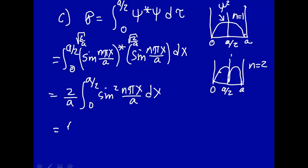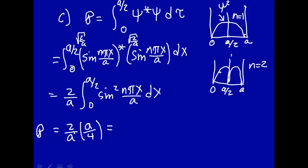So this is equal to 2 over a, and this integral — Wolfram Alpha says — is a over 4. So the probability of finding a particle in the first half of the box is just one half. And that's exactly what we expected: half probable here, half probable there, half and half. And it's independent of the quantum number n.